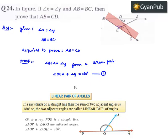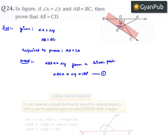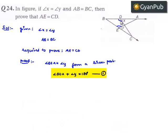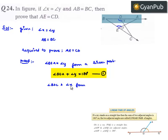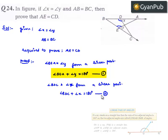Similarly, about AB at point D, angle BDC and angle x form a linear pair. Therefore, the sum of angles that form a linear pair is equal to 180 degrees. So angle BDC plus angle x is equal to 180 degrees. Let this be equation number 2.